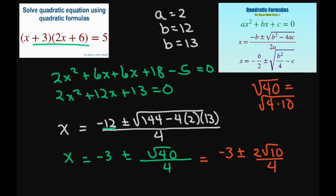So finally we're going to have x equals negative 3. And this will be 2 like that. Plus or minus square root of 10 divided by 2.